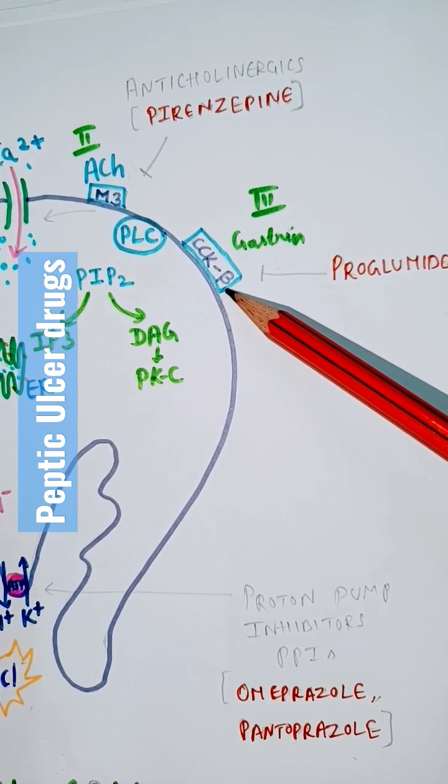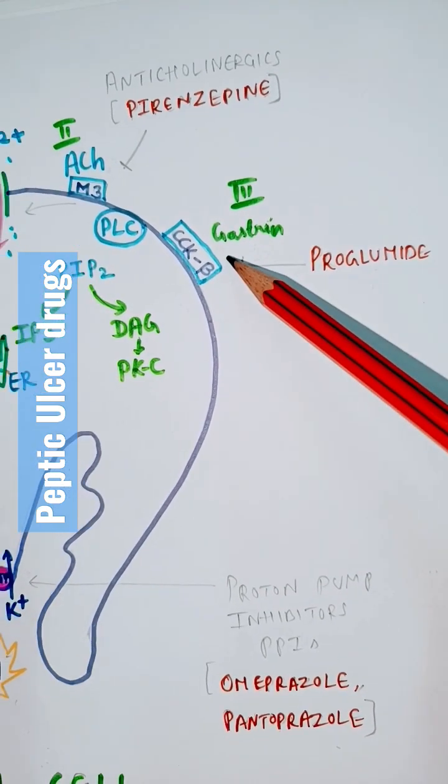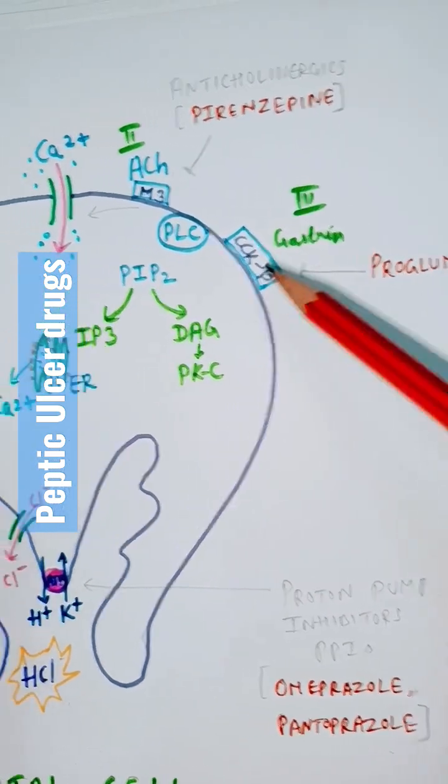Gastrin stimulates CCK beta receptor. So proglumide inhibits the gastrin on CCK beta receptors.